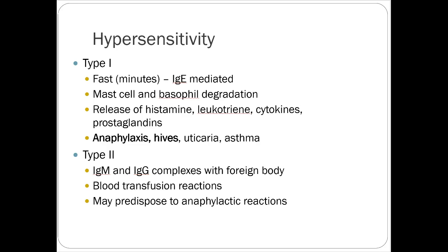There are a few different types of hypersensitivity. Type 1 is the big one — anaphylaxis, or people who break out in severe hives. The giveaway is it's fast: it usually happens minutes after exposure. It's IgE-mediated, and you get mast cell and basophil degranulation with lots of histamine, leukotrienes, cytokines, and prostaglandins — all resulting in inflammation, which causes airway obstruction, the fatal component of anaphylaxis.